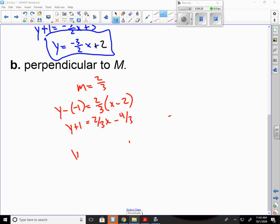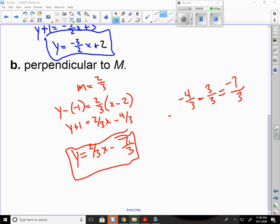Subtract the 1 over. y equals 2 thirds x. And if I have negative 4 thirds, and I'm trying to subtract 1, I have to get a common denominator. So it becomes 3 thirds. 3 divided by 3 is 1. That's why we can do that. So that's negative 4 minus 3, which is negative 7 over 3. And that's my final answer. 2 thirds x minus 7 thirds.